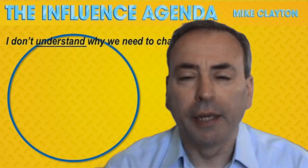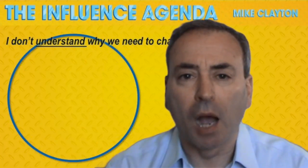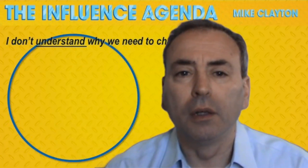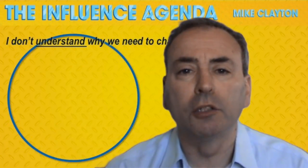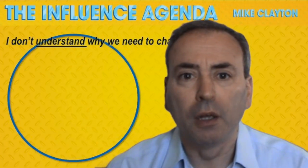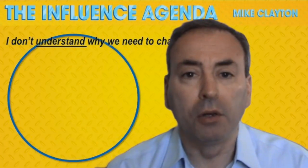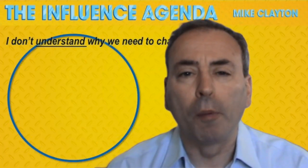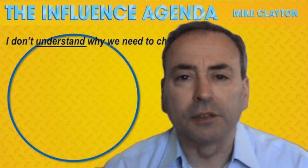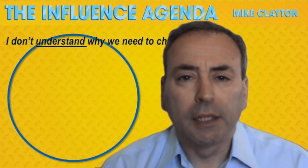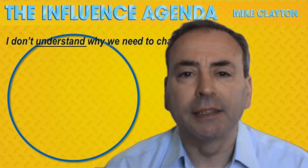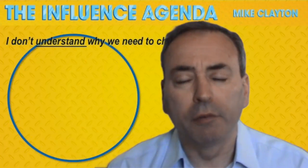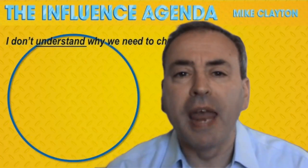The first layer we encounter is: 'I don't understand why we need to change.' And of course you don't — because unless you've seen those compelling drivers for change for yourself, it's natural to resist. If it ain't broke, don't fix it. That's a perfectly reasonable approach. So our first job as engagers of stakeholders is to explain why change is necessary — to show that things are broken.